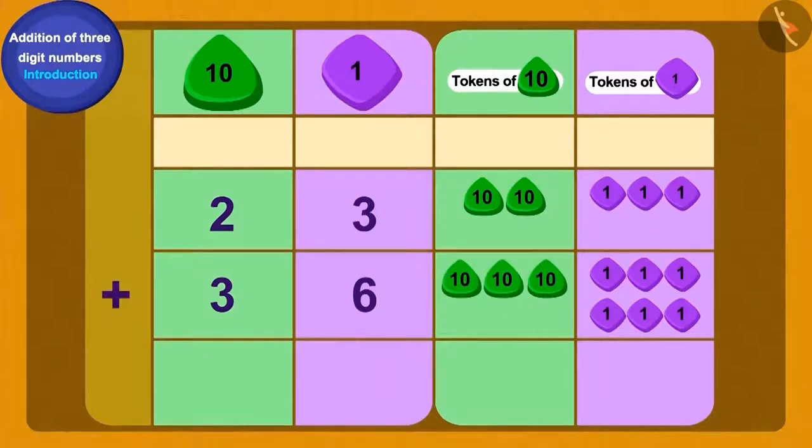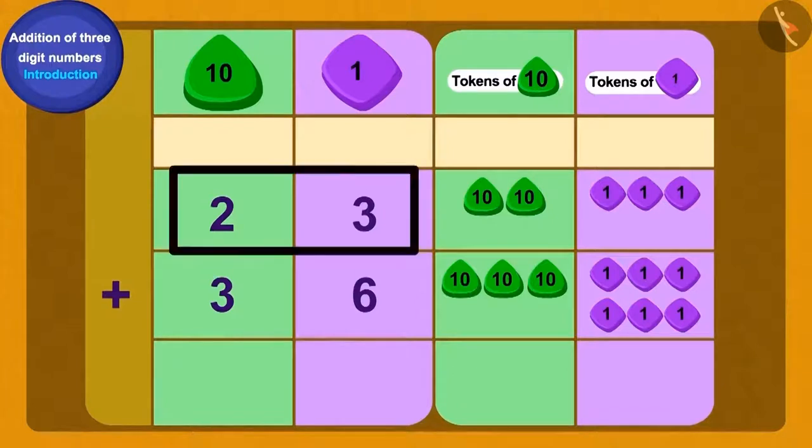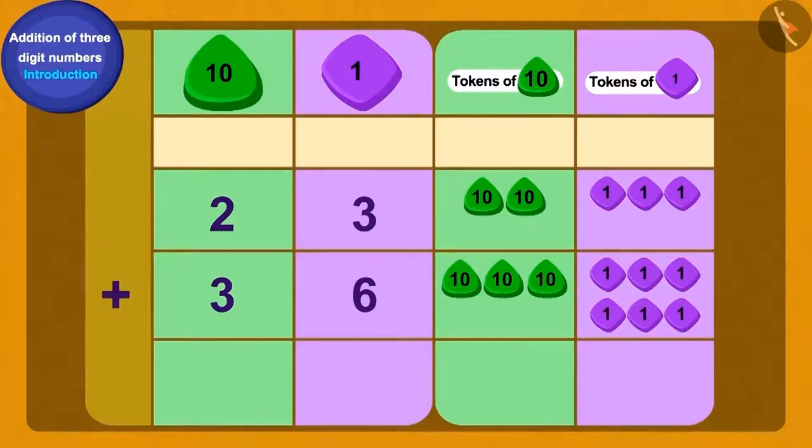Do you remember you learned in class two about how to write two-digit numbers using the method of tokens of tens and ones? We can write twenty-three and thirty-six using tokens like this. We will first add the ones tokens. Add six ones to three ones and we get how many ones? Nine ones.